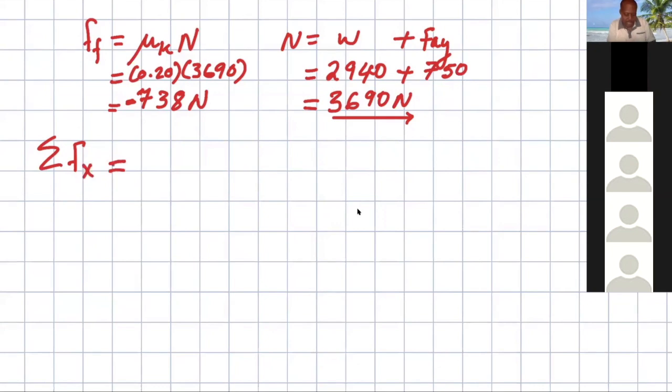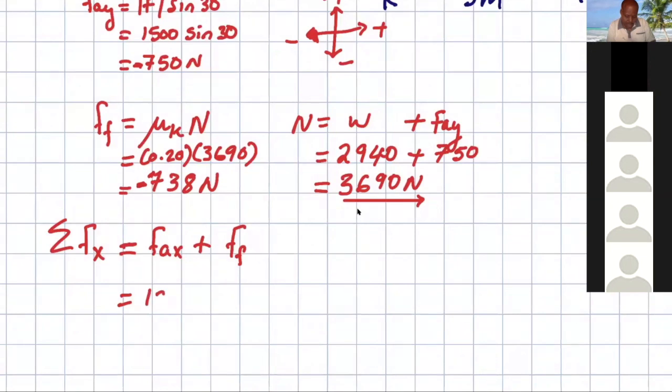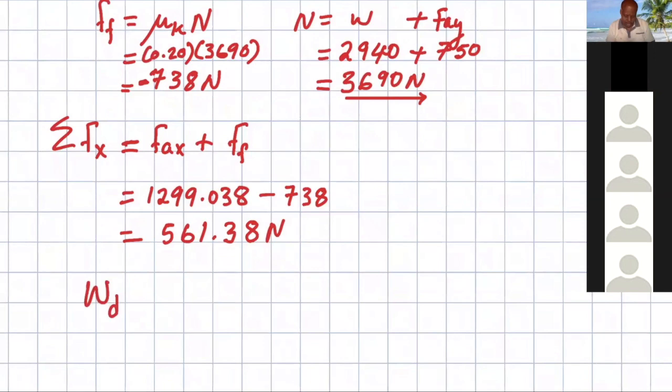Sum of the forces in the x direction, so it's 1299.038. Now the friction force that there is negative is going to be negative 738 newtons. The difference between those two. We know the work done will be basically the force or the net force in that direction multiplied by the displacement in that direction.